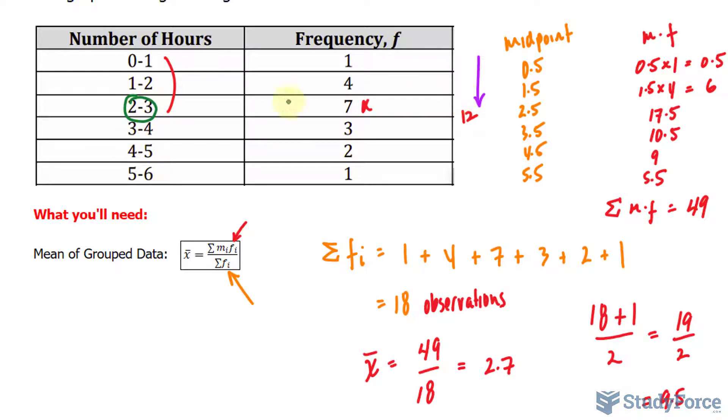Therefore we can conclude that the median exists between 2 and 3 hours. Now you find the average between 2 and 3. You add 2 plus 3, which is 5, divided by 2, and you end up with 2.5 being your median.